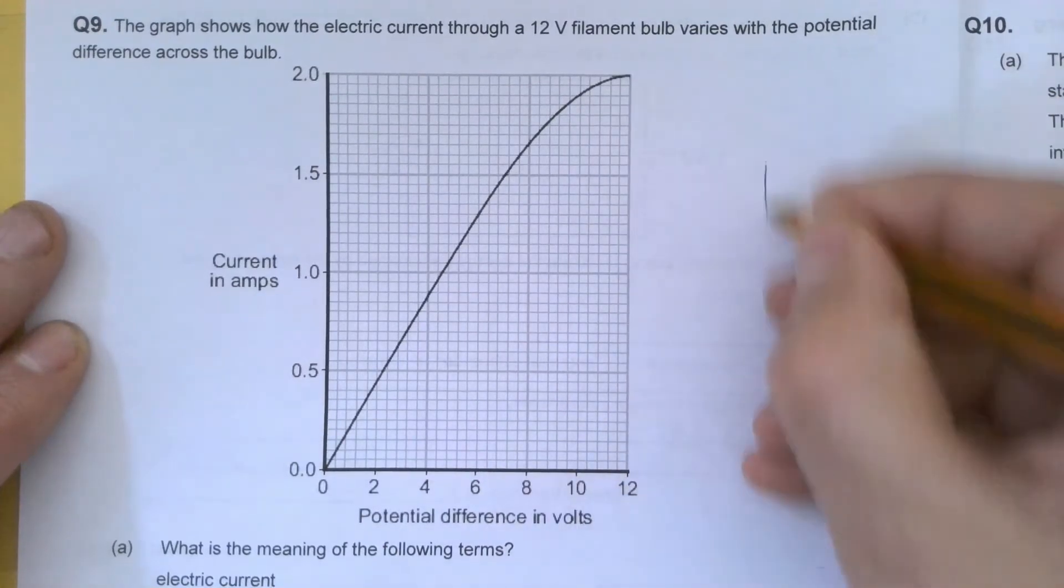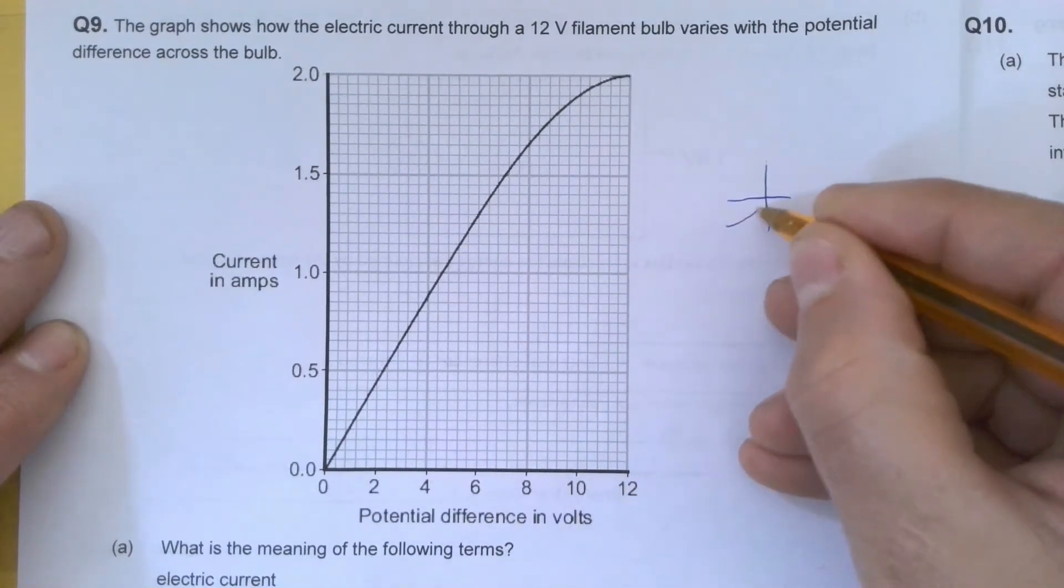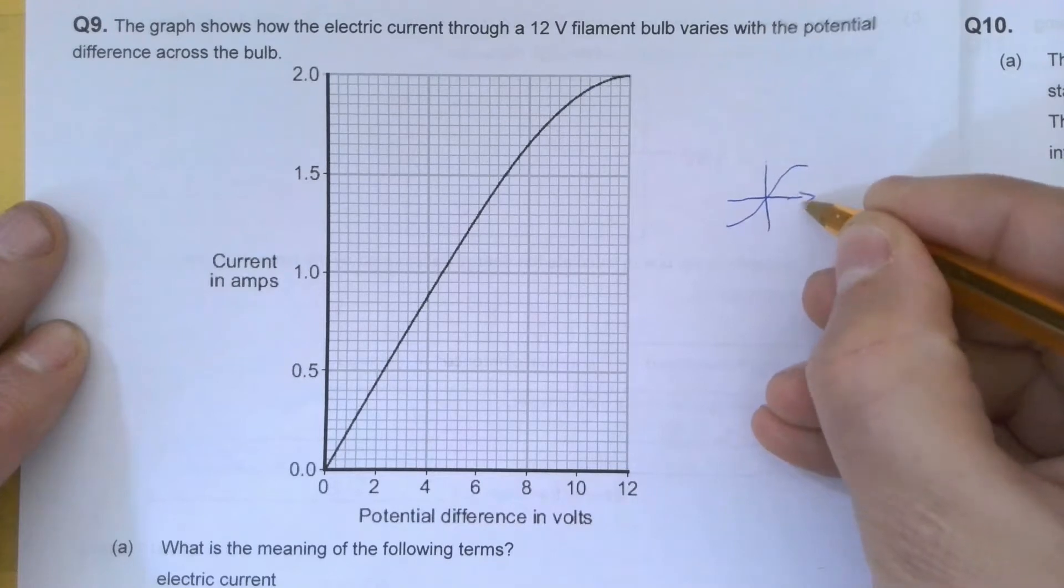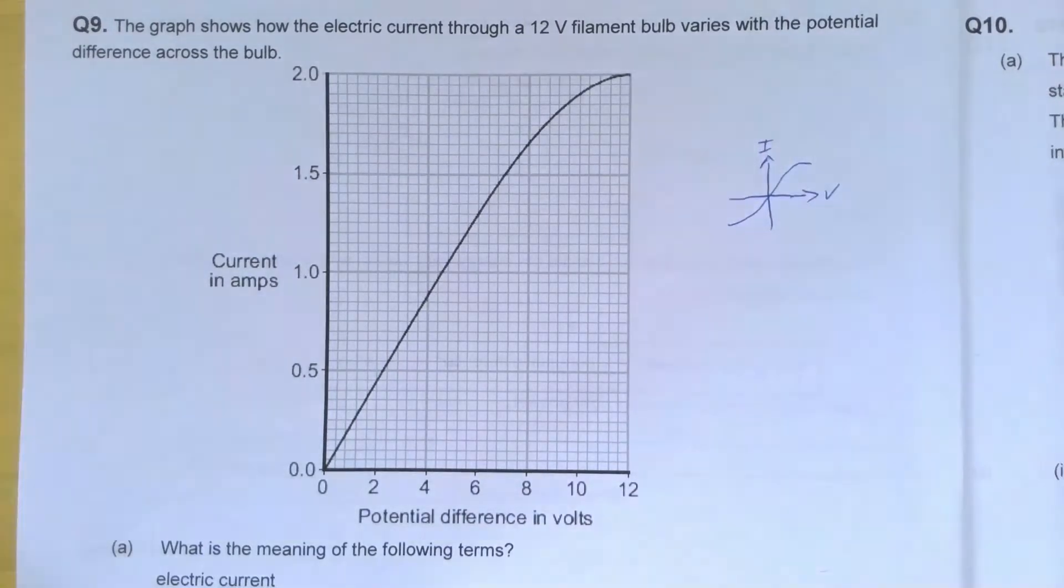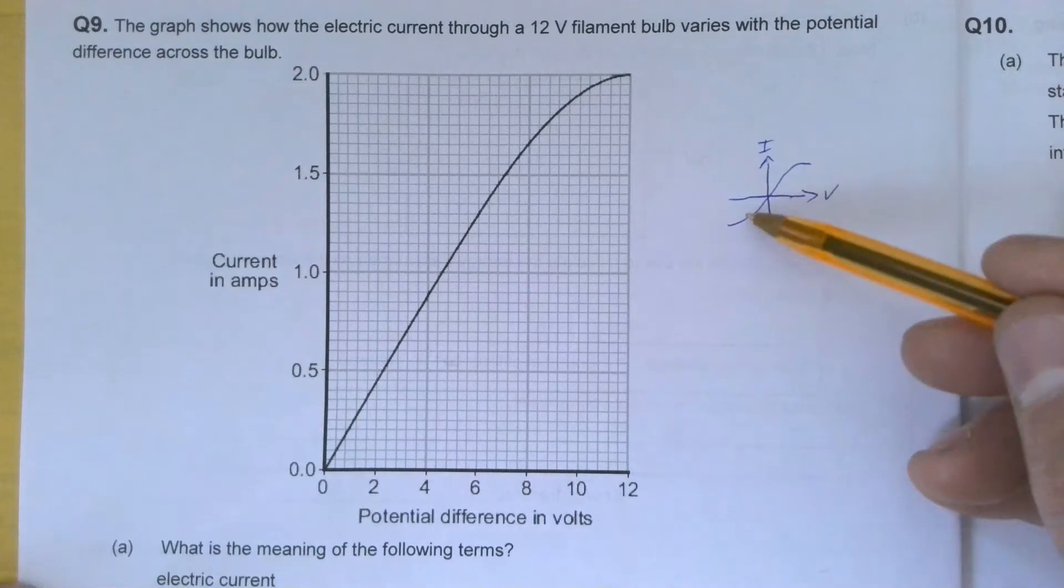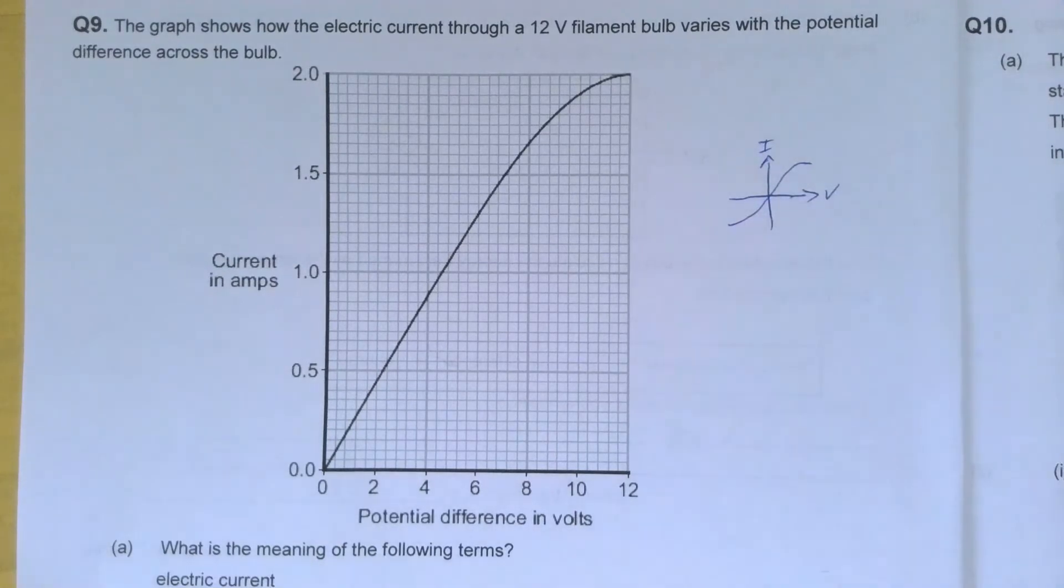Yeah, that looks how I'd expect. Remember for a filament bulb we're expecting a graph that sort of does that - a VI relationship. The reason it does that, it's not straight, is because as temperature increases resistance increases, which means it's no longer proportional so it's not straight.